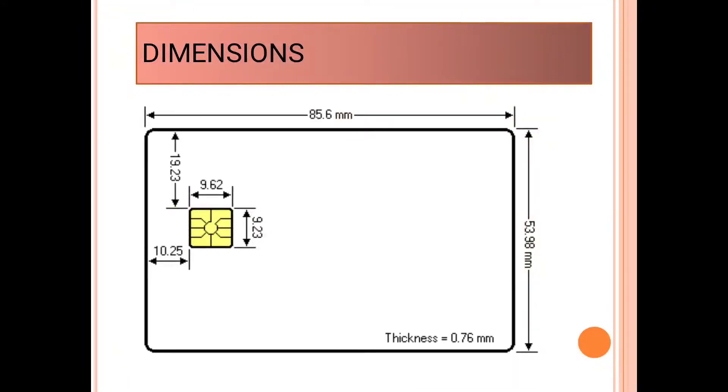The dimensions of smart card. The length of card is 53.98 mm. The width of card is 85.6 mm. The thickness of card is 0.76 mm. The length of smart chip is 9.23 mm and its width is 9.62 mm. The chip is positioned 19.23 mm from the top of the card and 10.25 mm from the side of the card.